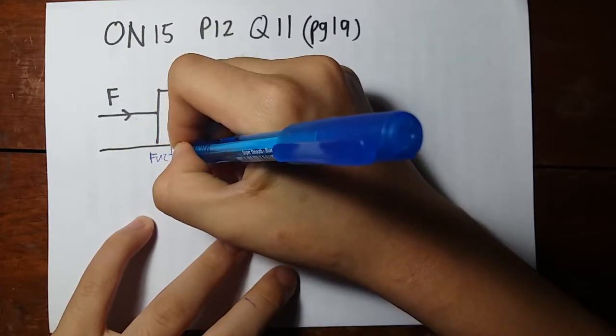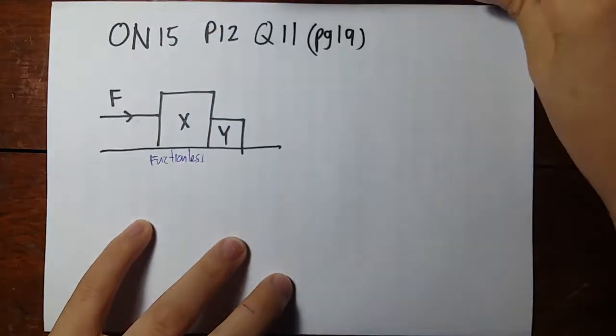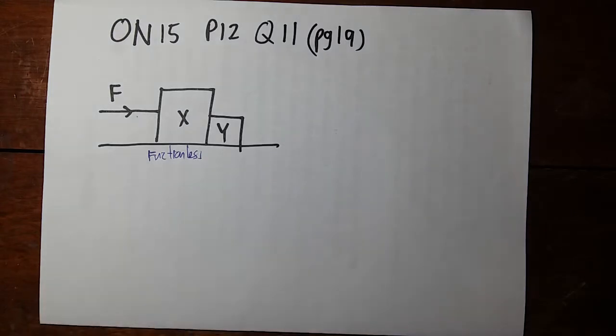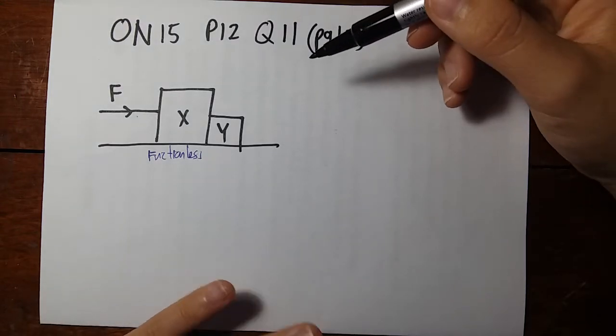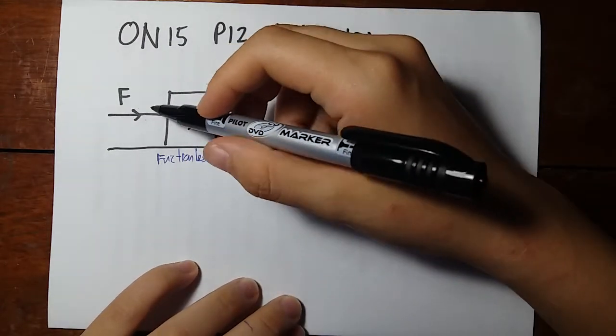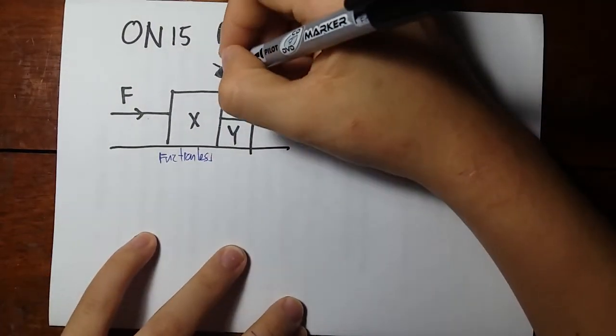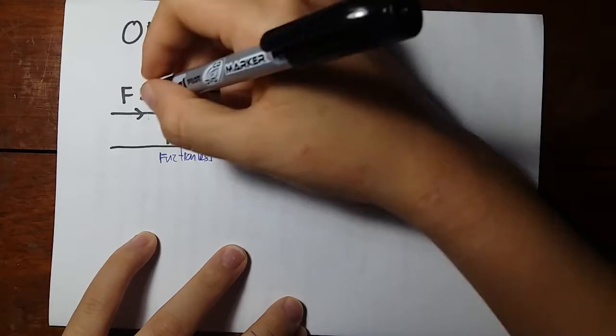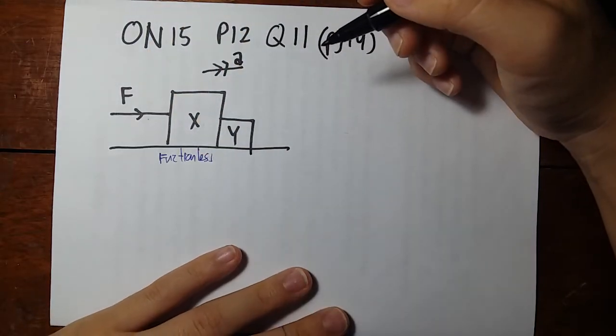Because then we don't take into account the frictional force. Let's see, the info we have: two blocks remain in contact, so they're touching each other, and they accelerate along the surface because there's a force there.